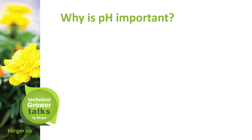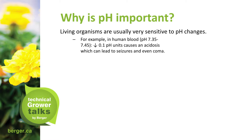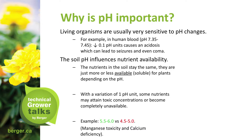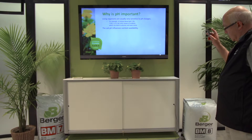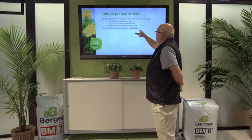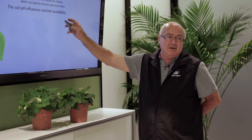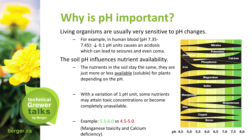Why is pH important? Living organisms are usually very sensitive to pH changes. For example, human blood is 7.4 to 7.5 — even a drop of just 0.1 pH units causes acidosis, which can lead to seizures and even coma. The soil pH influences nutrient availability. This is the most significant reason why we monitor pH — the fact that at lower pH, certain nutrients aren't available, and at higher pH, other nutrients aren't available.